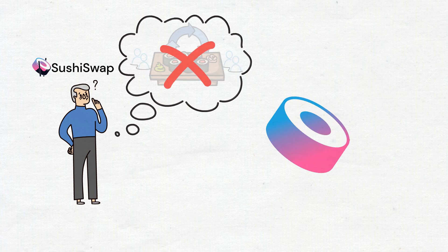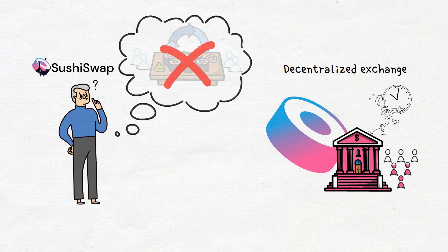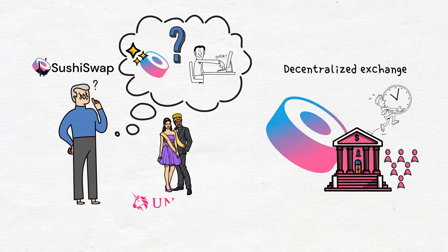Rather, SushiSwap is actually a decentralized exchange that's been around for quite some time now and that has managed to build up quite the following. What makes it special though, and why would you use it over other popular names in the industry, such as Uniswap?